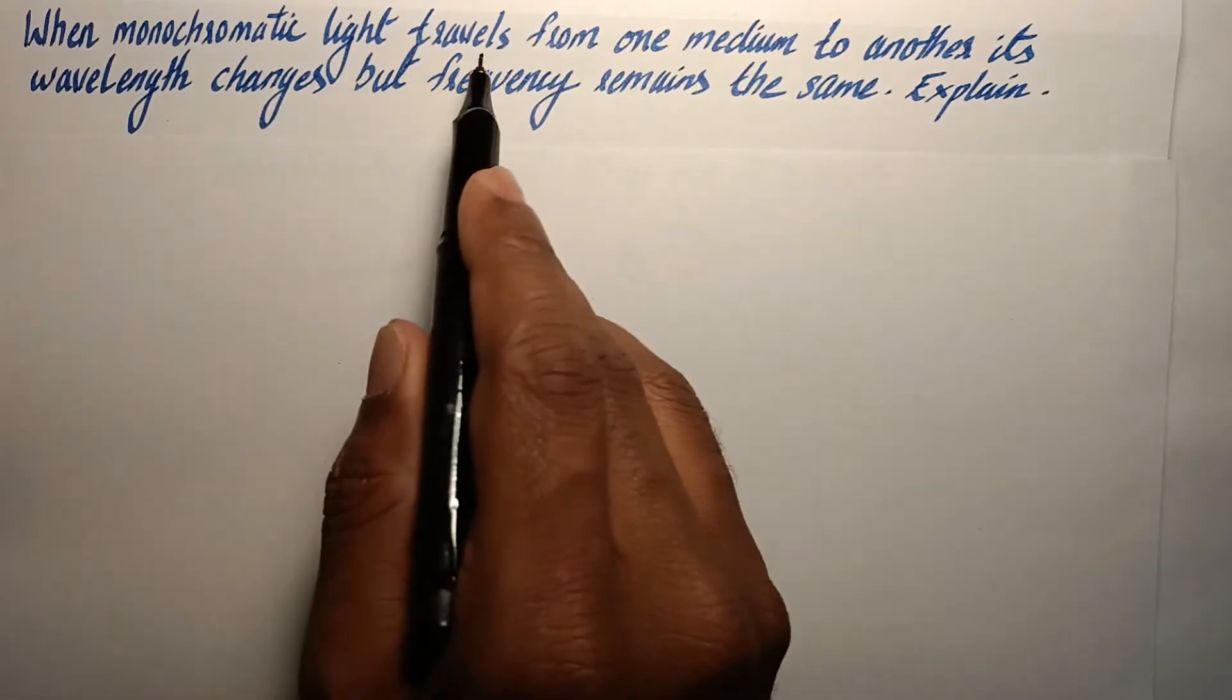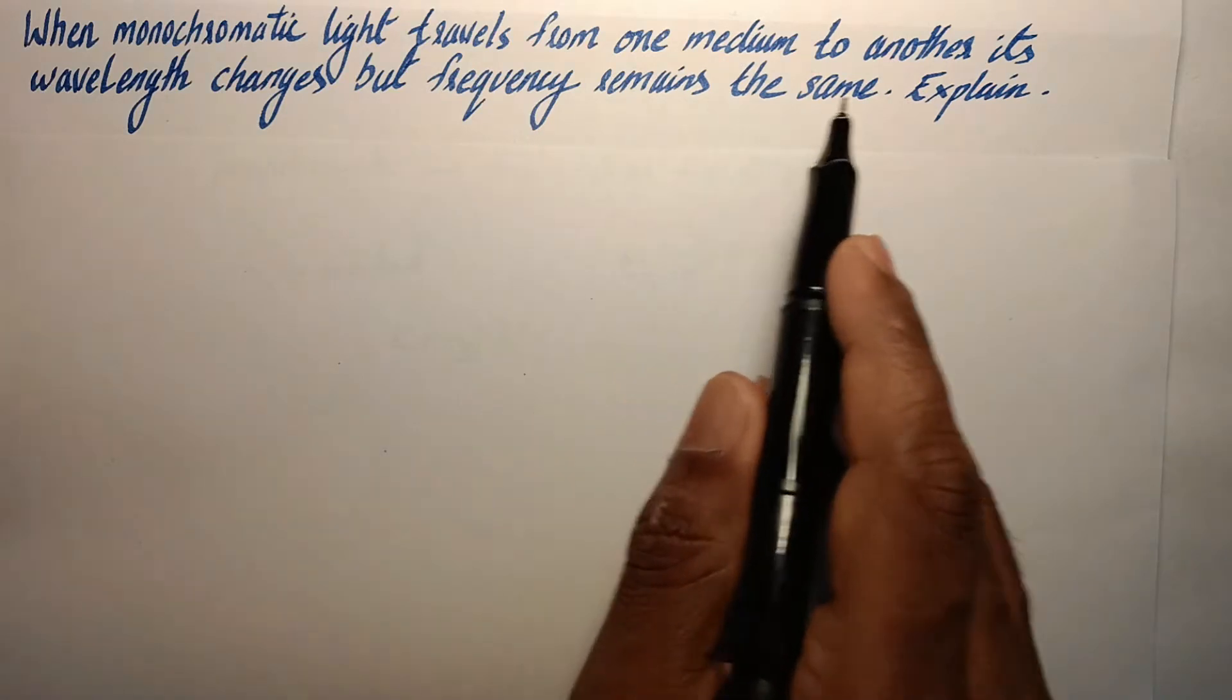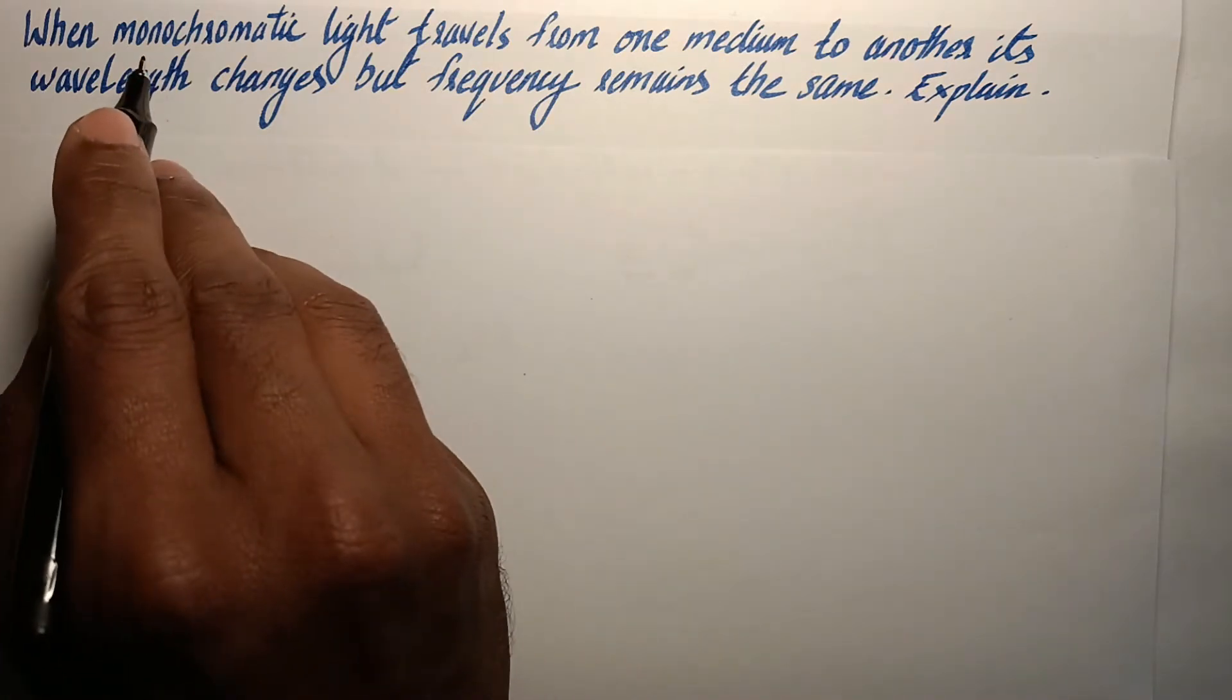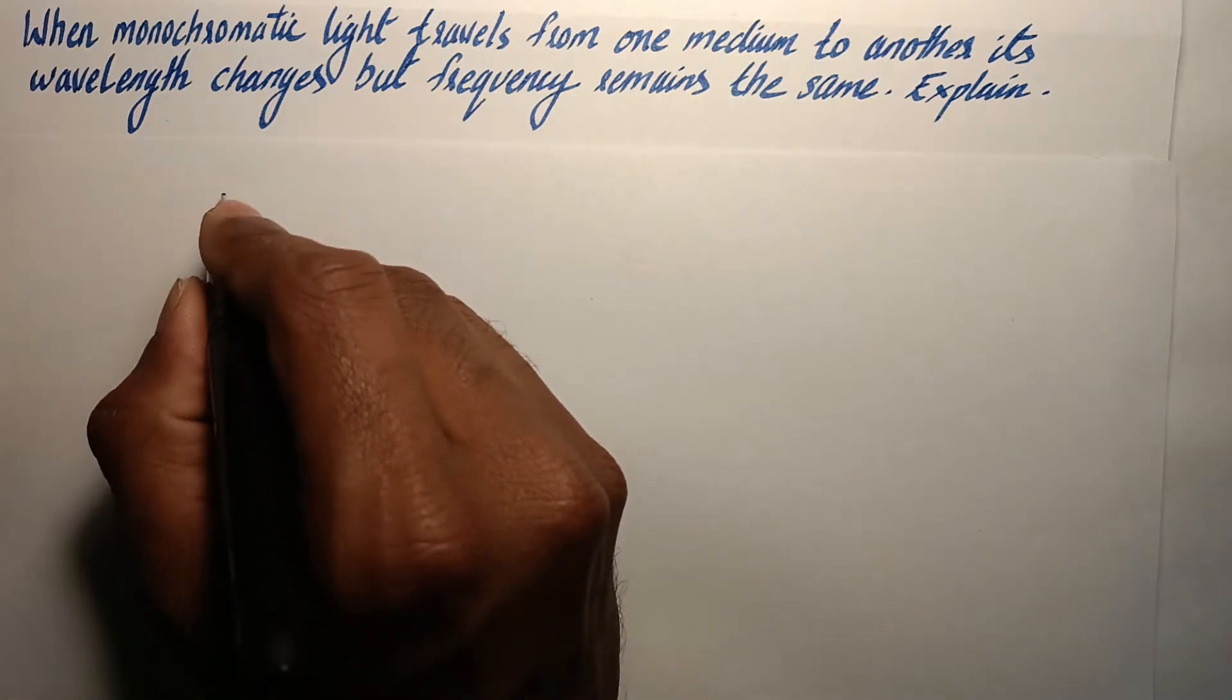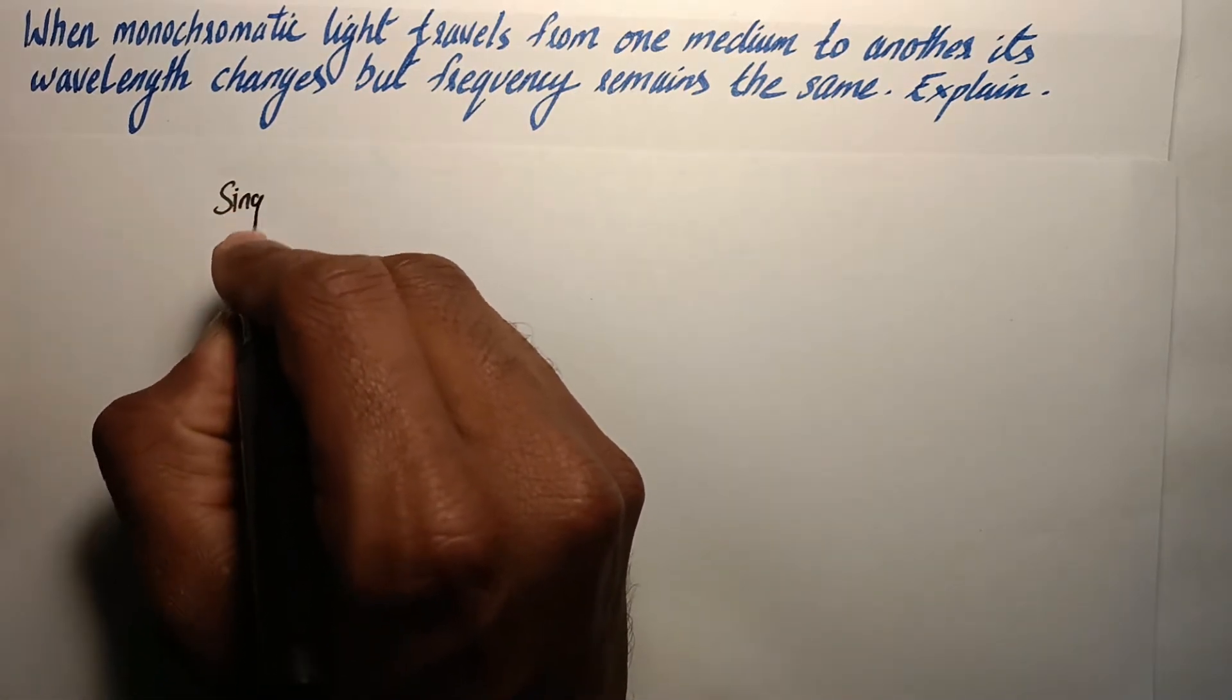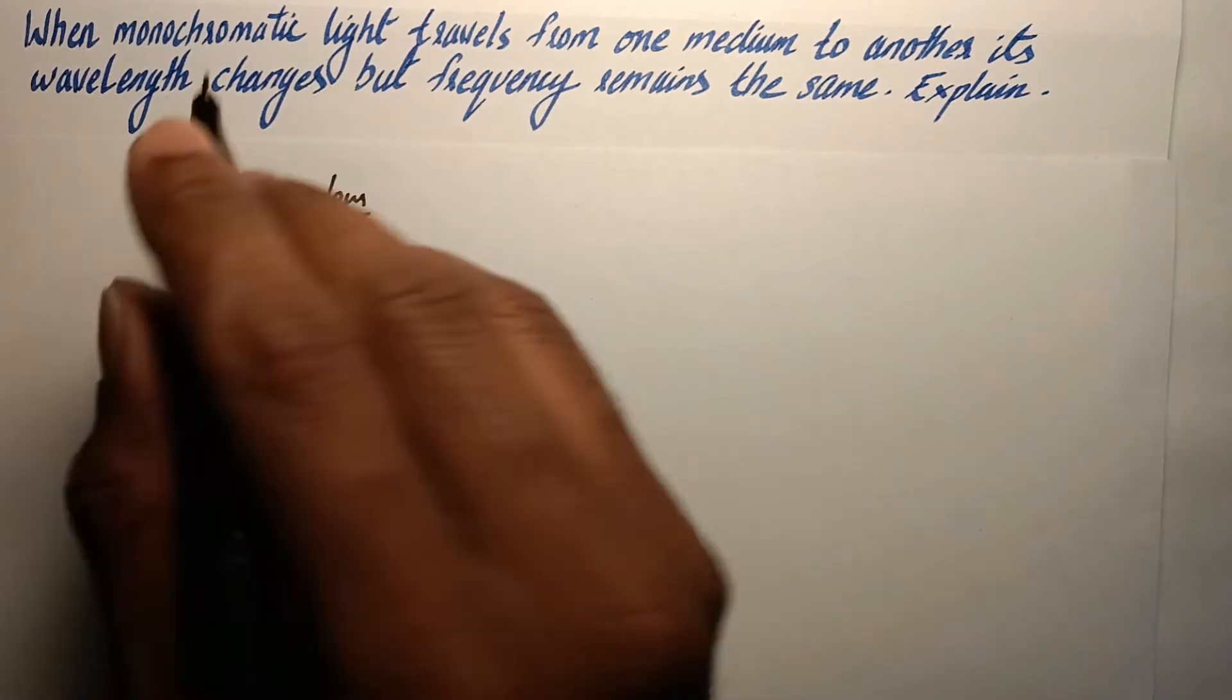When monochromatic light travels from one medium to another, its wavelength changes but frequency remains the same. Monochromatic light means it is a single colored light or a color with a specific frequency.